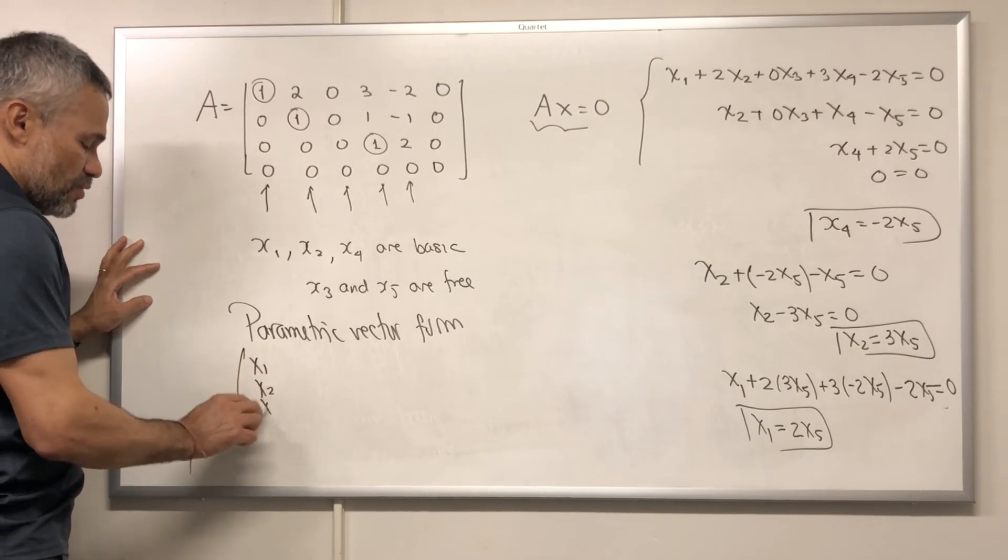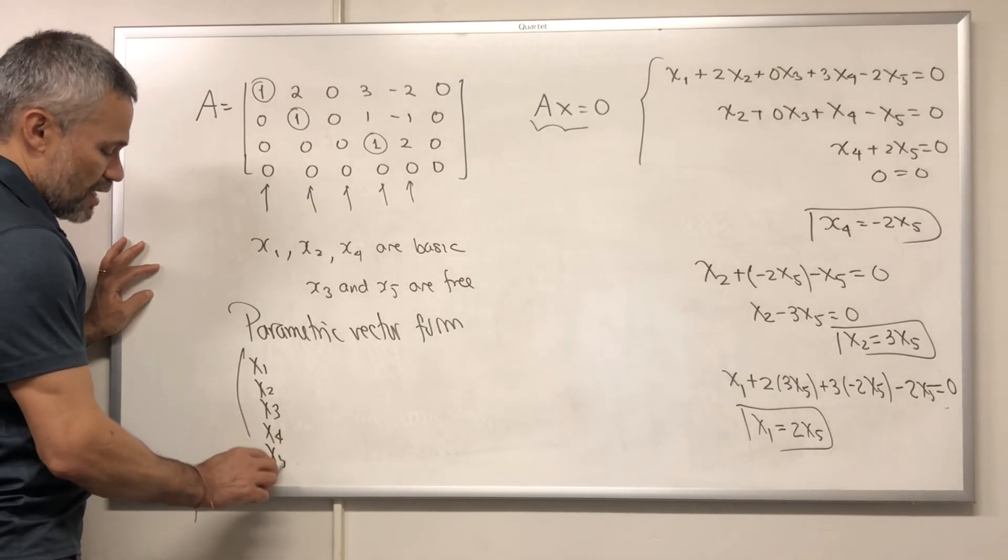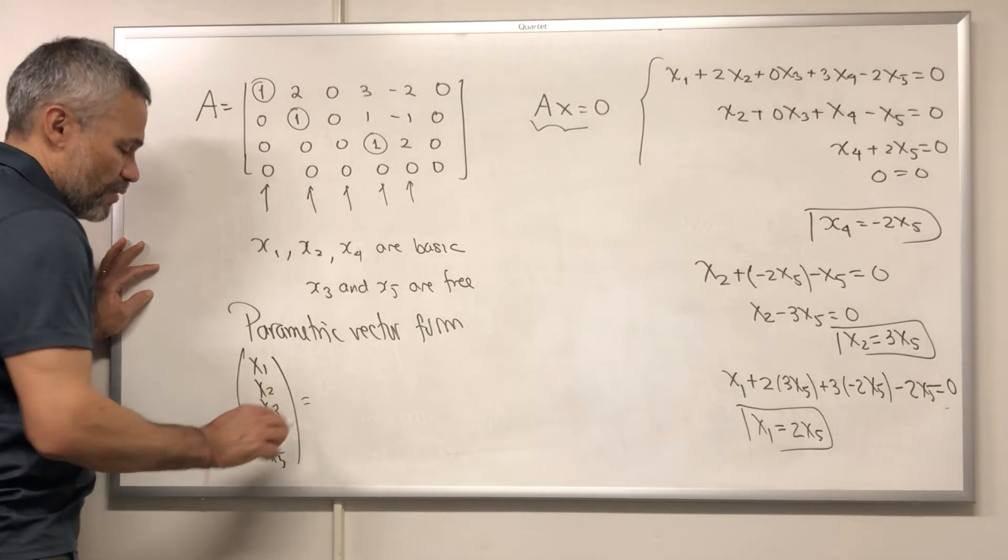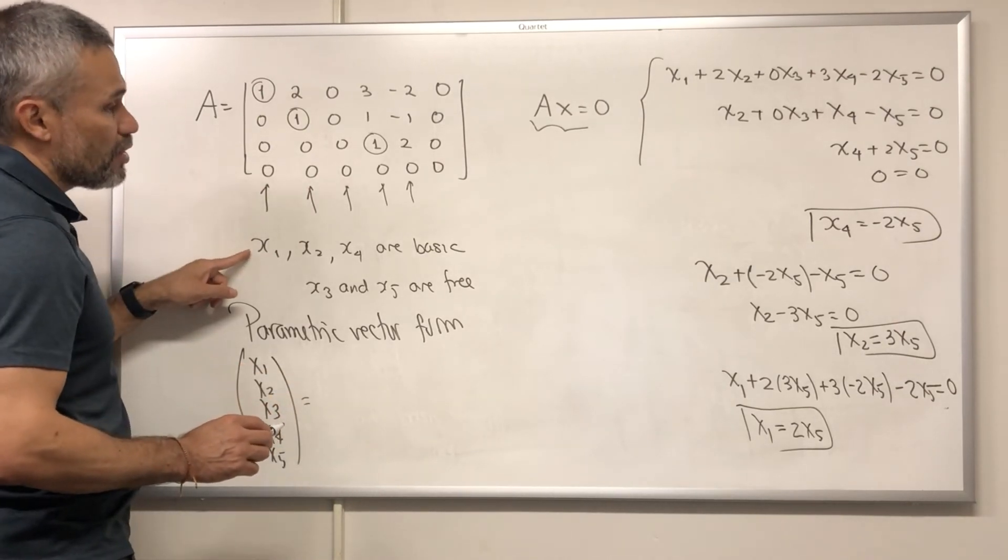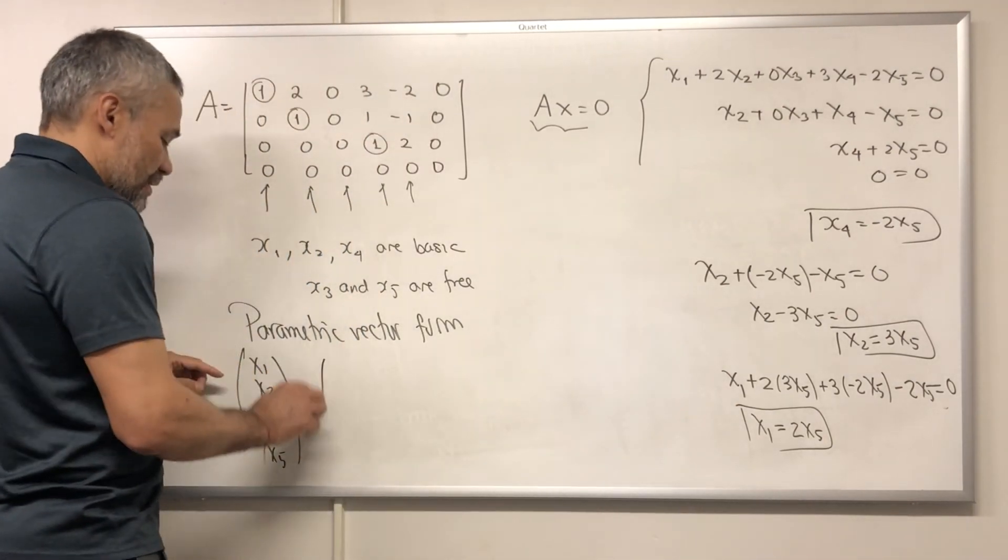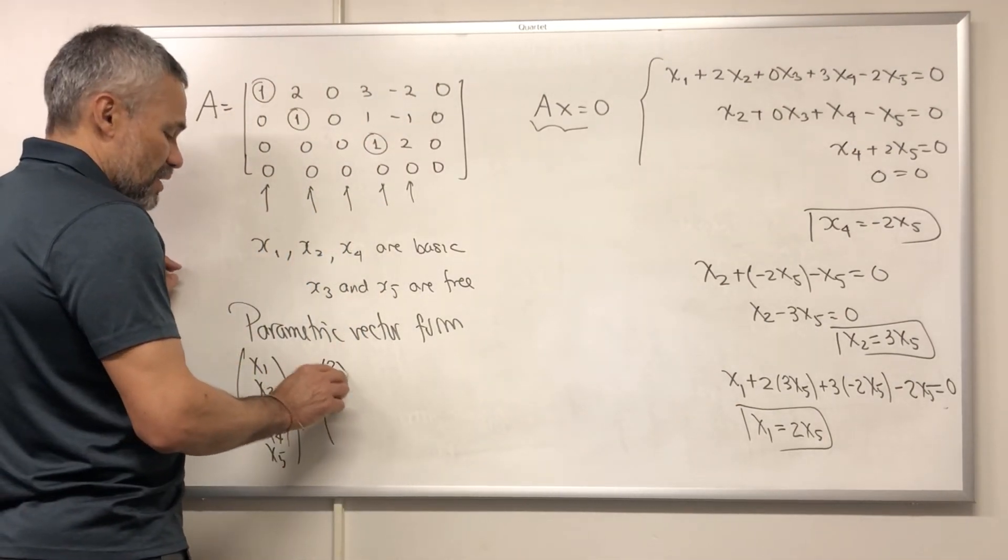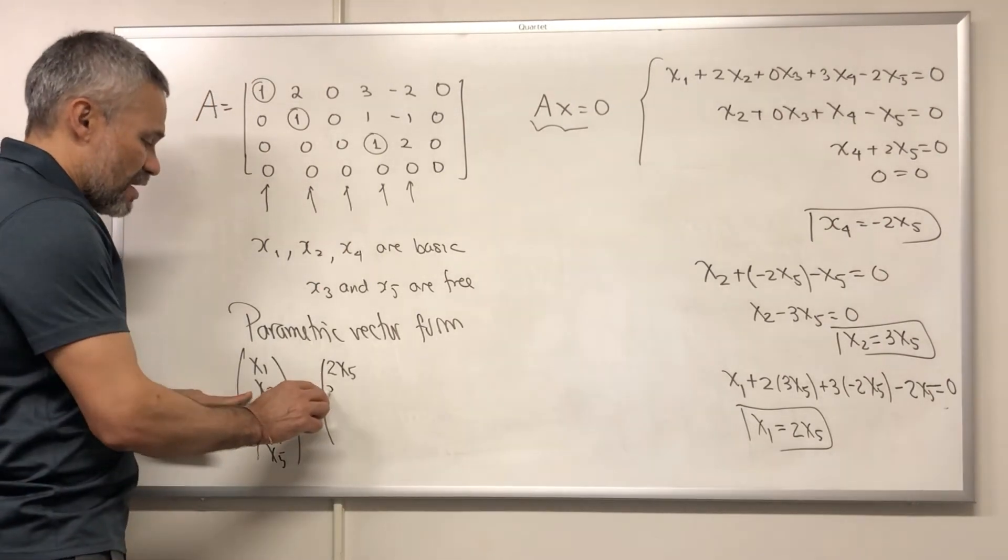X1, X2, X3, X4, and X5. And we write it equal to, X1 is a basic variable. Then we write that in terms of the free variables. Then we have that X1 is 2 times X5. X2 is 3 times X5.